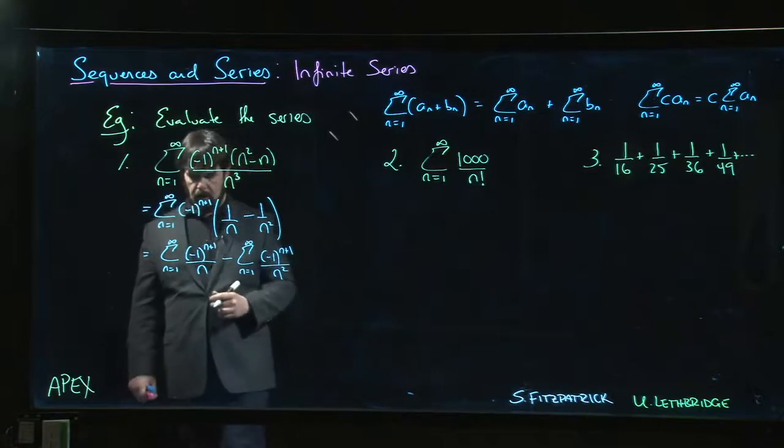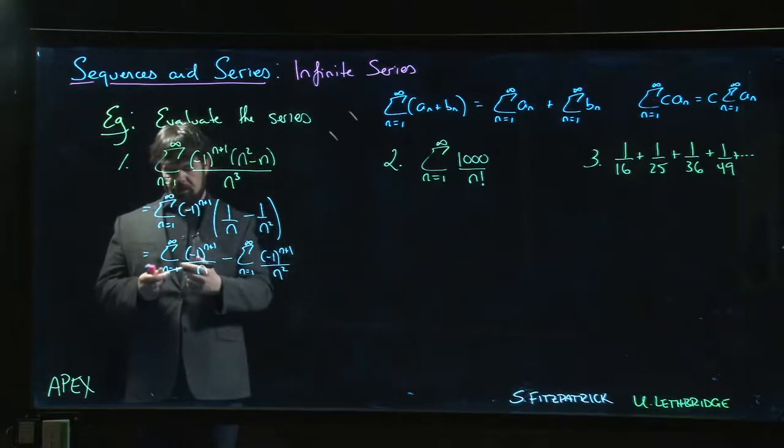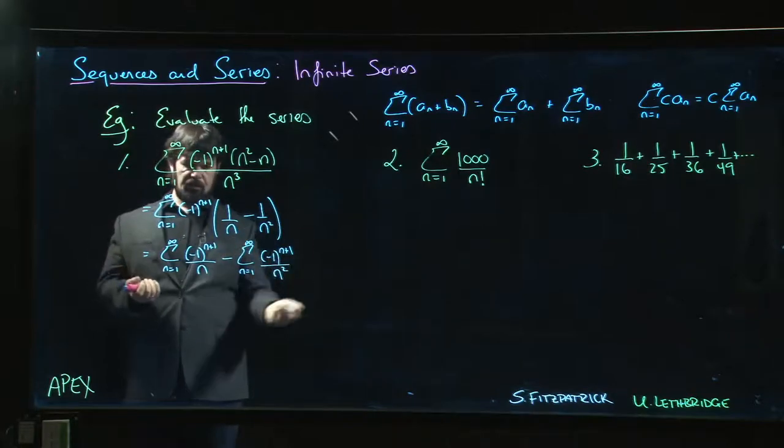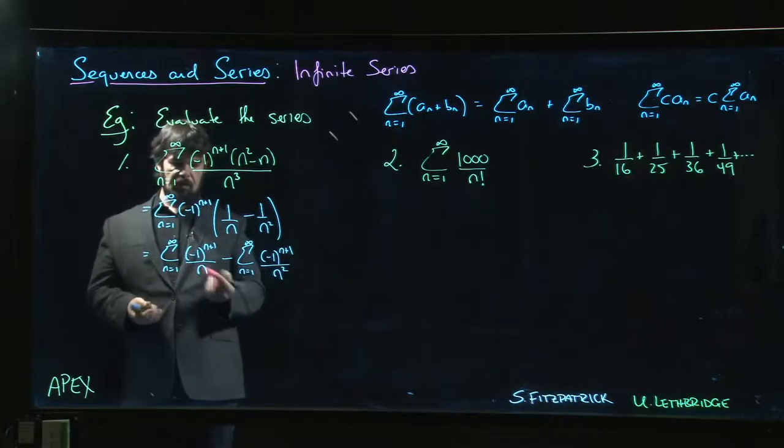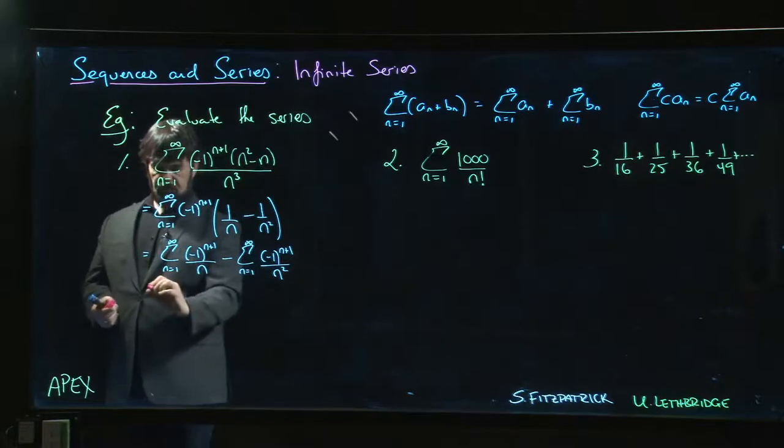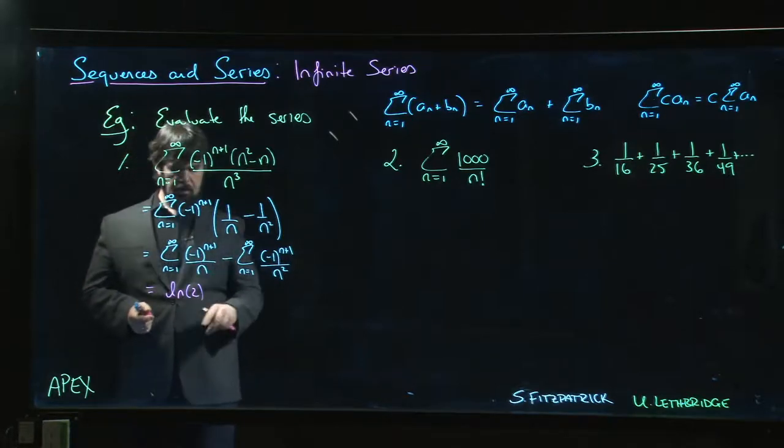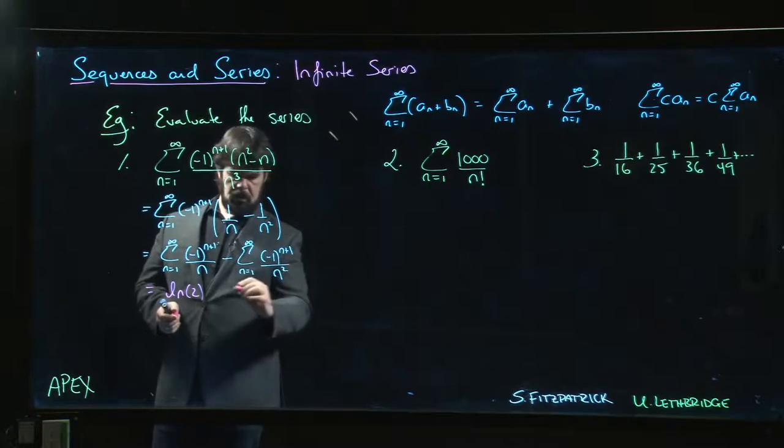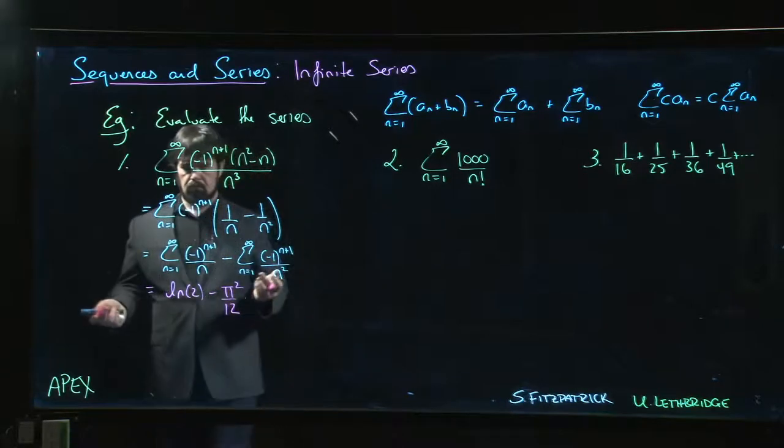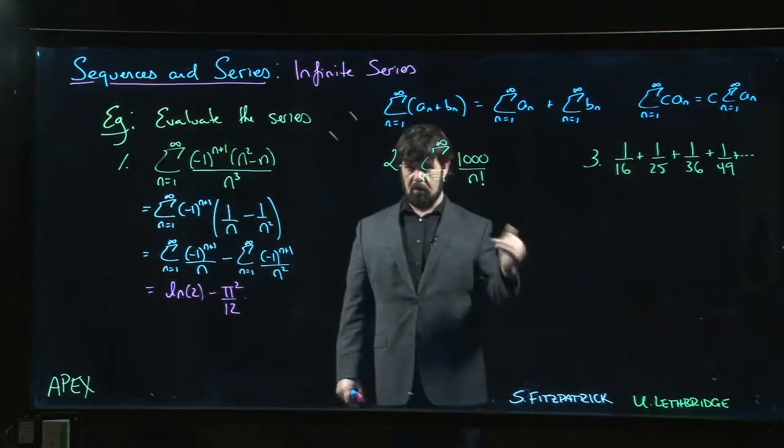Now each of these turn out to be known results. These are not things that we're supposed to know how to come up with at this point; they're just results that somebody somewhere in the past has proved. They're given to us in the textbook as a list of known values. This first one here is the natural log of 2, and this one here turns out to be π^2/12. There's some fairly sophisticated mathematics that probably goes into establishing that, well beyond what we're doing in this course.